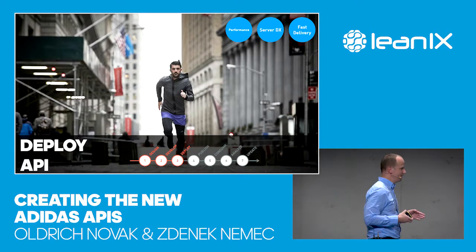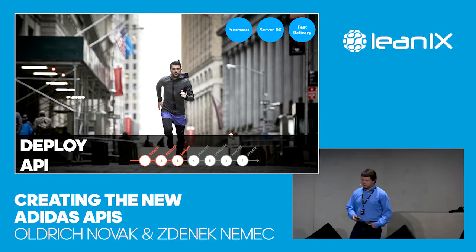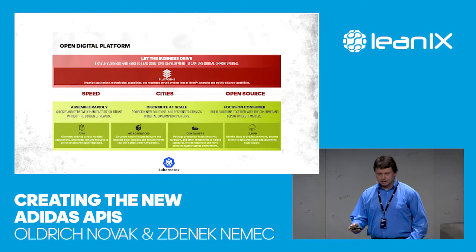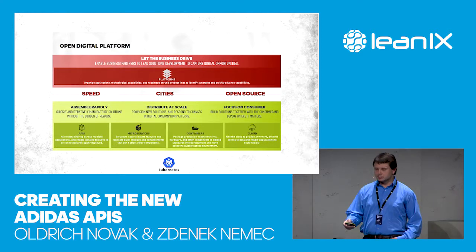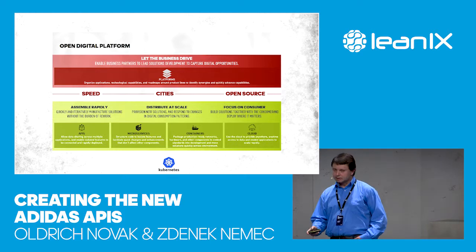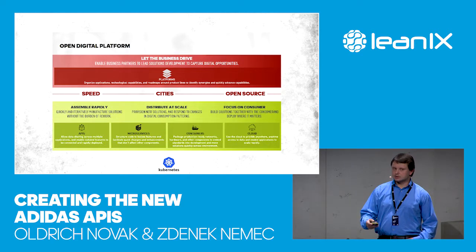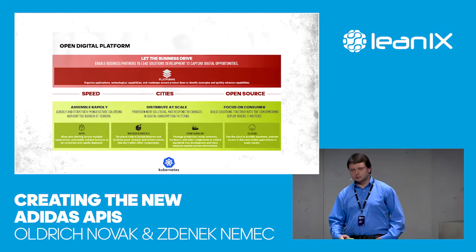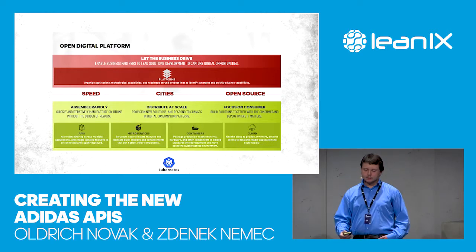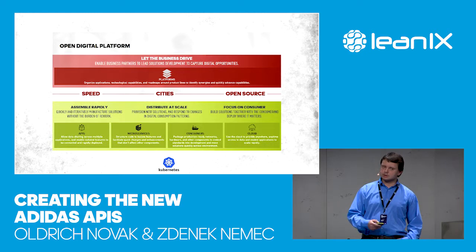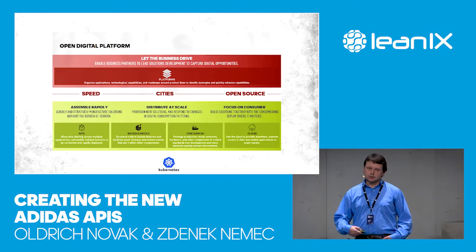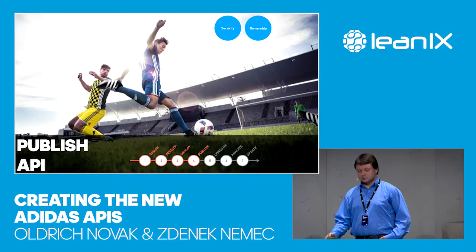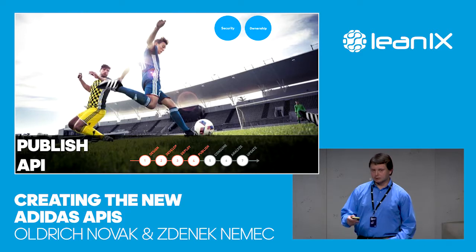Now the API is designed and developed, and we need to deploy it. For the deployment phase, we introduced something called the Open Digital Platform — our kind of platform-as-a-service here at Adidas, built on Kubernetes. It's a hybrid platform with Kubernetes clusters both on-prem and in the cloud. It allows us to assemble new solutions very rapidly using microservice architecture, scale our APIs automatically in an elastic way, and focus on our consumers — with multiple clusters around the world providing a superb experience wherever consumers are.